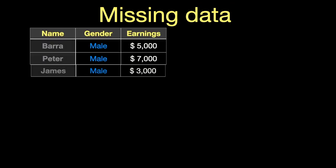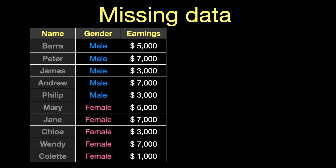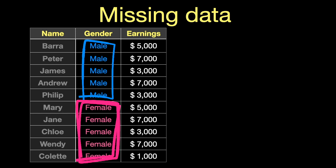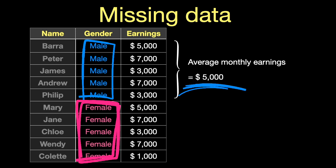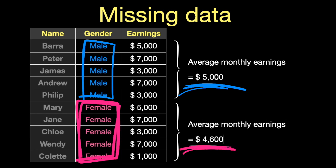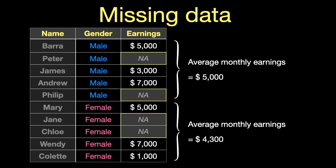I want to illustrate the importance of understanding the distribution of missing data. To do this, we're going to look at a very simple data set. We're going to imagine we're interested in the difference in the average earnings of men and women — all of these figures are completely fictitious. In this data set there are no missing values, and we can see that the average earning for men is about $5,000 a month and for women about $4,600, a little less.